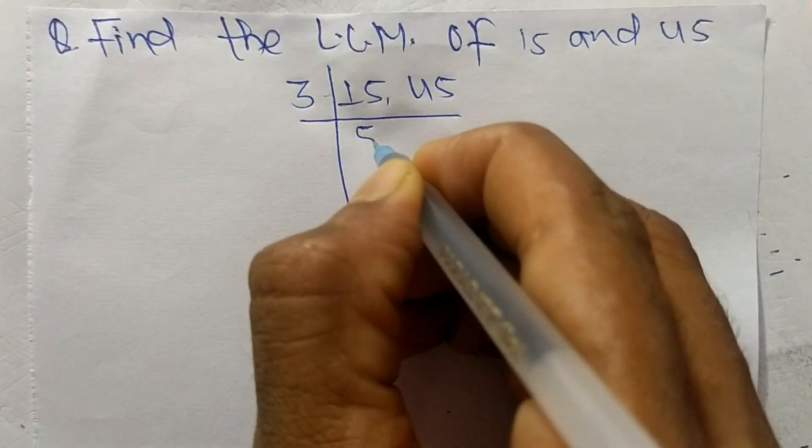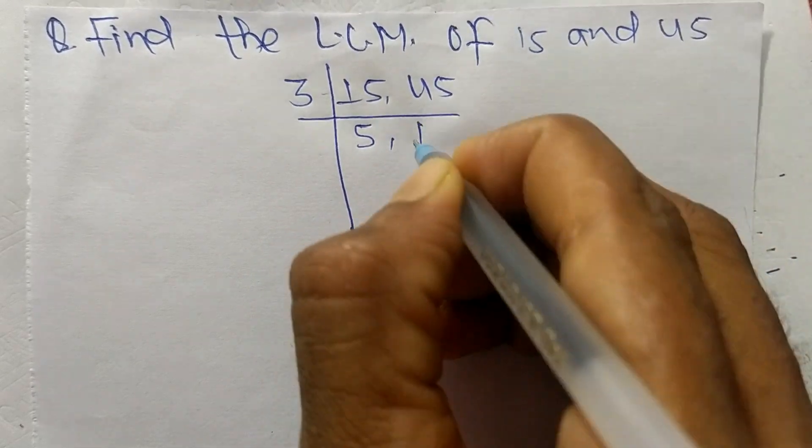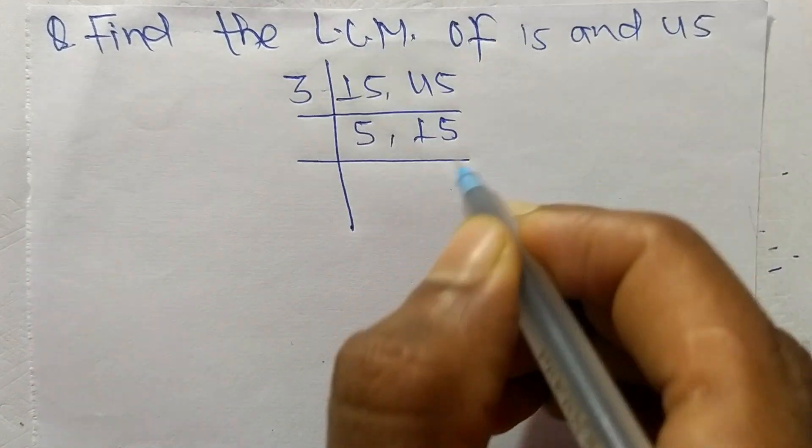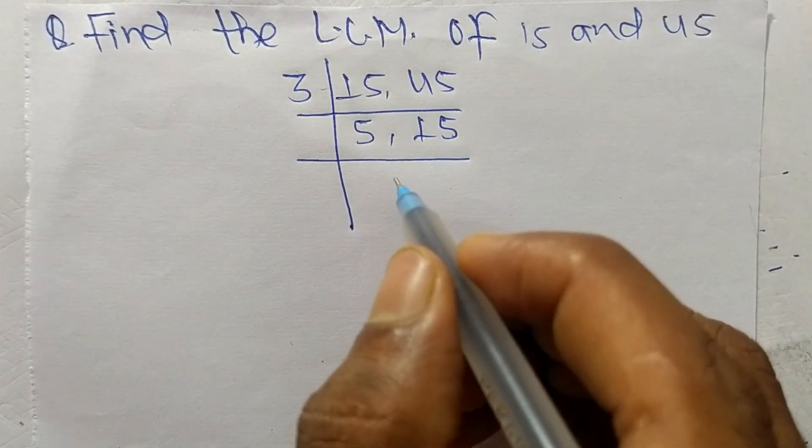So 3 times 5 means 15, 3 times 15 means it is 45. So now these both numbers are not exactly divisible by the same number.